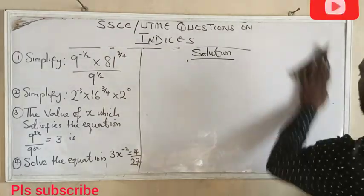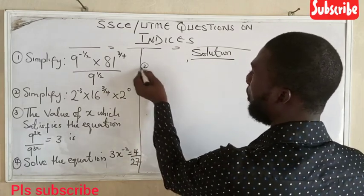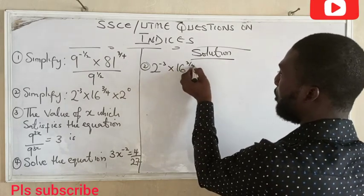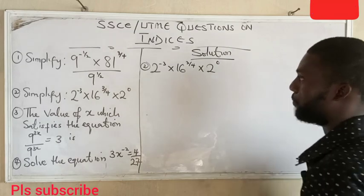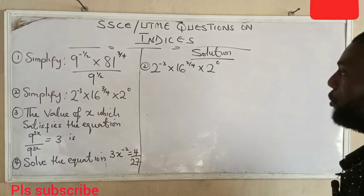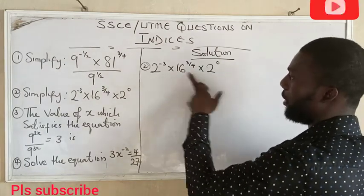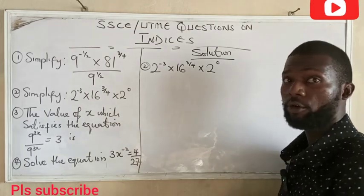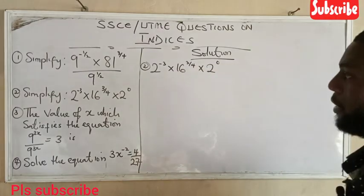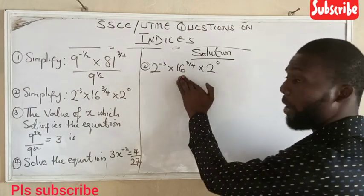The next question says simplify 2 raised to power minus 3, times 16 raised to power 3 over 4, times 2 raised to power 0. There are many ways to solve this, but we look for the easiest. We can see 2, we can see 2, and we can see 16. The secret is to make sure they have a common base, so we convert 16 to 2 raised to power something.